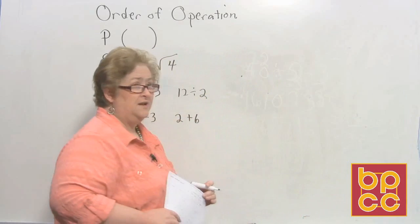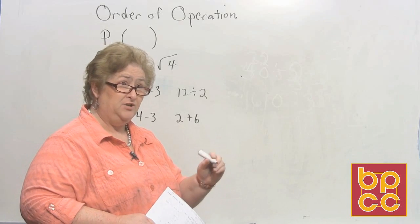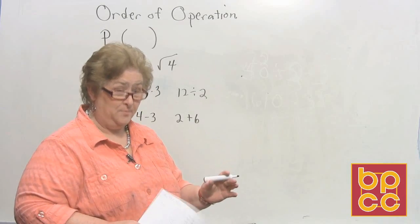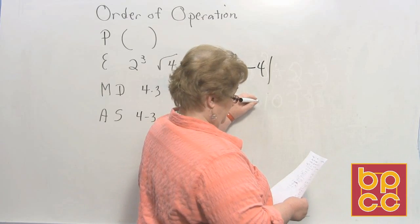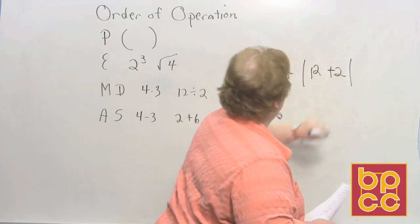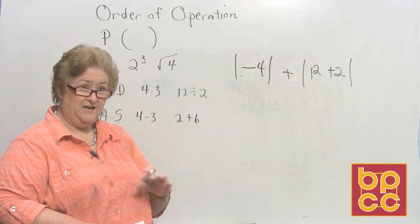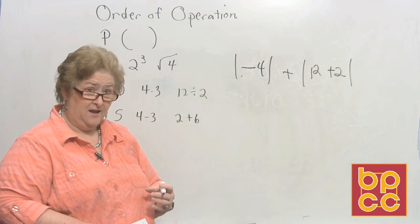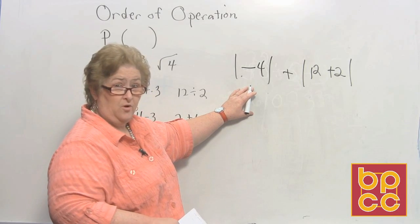All right. Now this time I'm going to give you one that uses absolute value. Remember absolute value is how many jumps back to 0. It's always positive unless there's a negative sign waiting outside the bars. All right. I'm going to go absolute value of a negative 4 plus 12 plus 2. So the first thing I want to do is I want to solve anything in absolute value. Then I want to bring the answers out. So there's nothing to solve on this one.